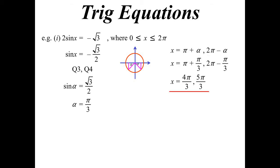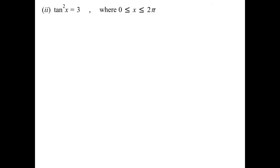In the third quadrant, the third quadrant was 180 plus the acute angle, so now it'll be π plus the acute angle. The fourth quadrant was 360 minus the acute angle, so now we have 2π minus the acute angle, and we end up with 2 answers: 4π/3, 5π/3.